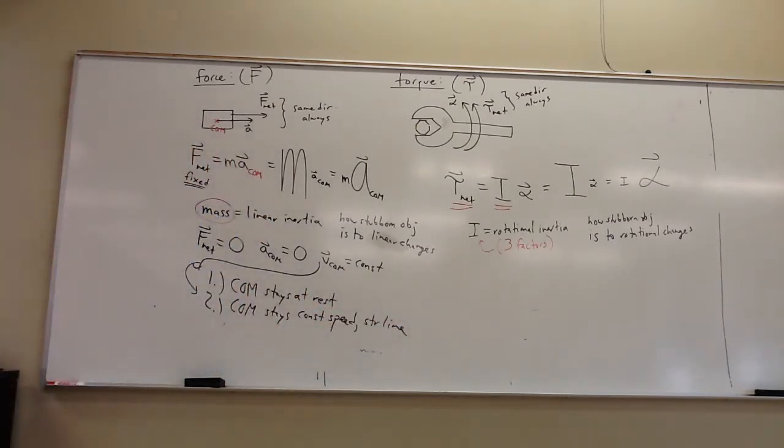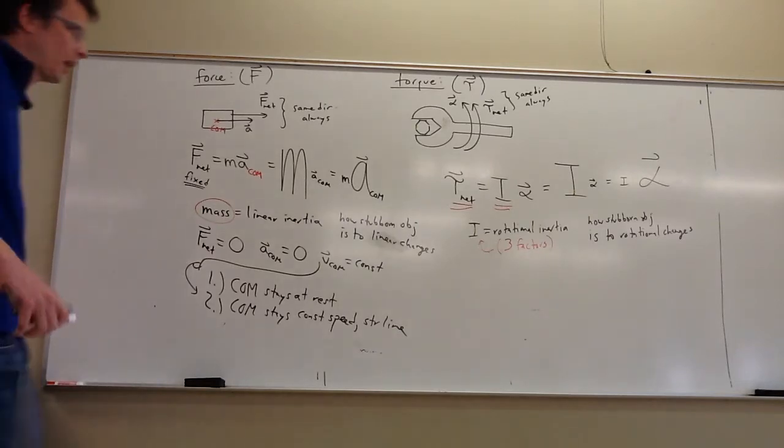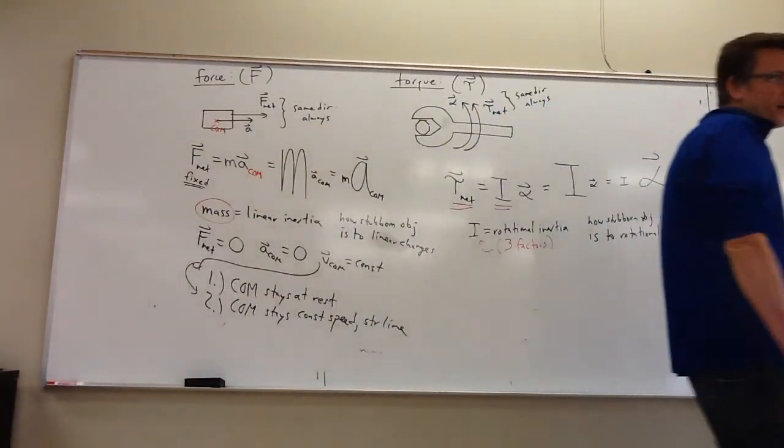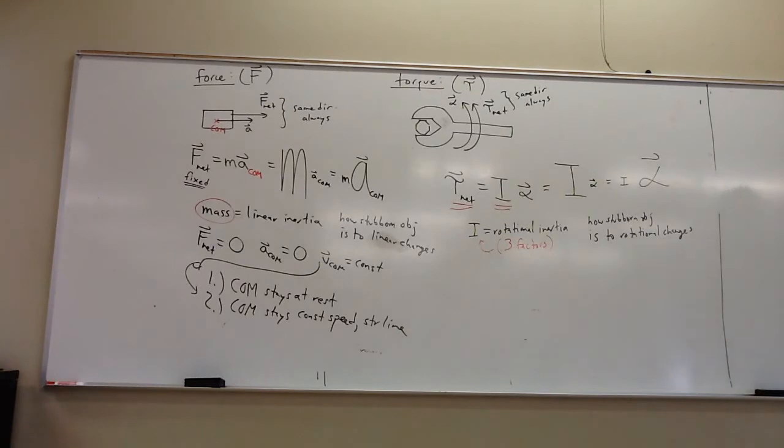If the velocity isn't going to be zero, it has to be constant, which means everything about it has to be constant. Constant speed and constant direction. Those are things that go into velocity.